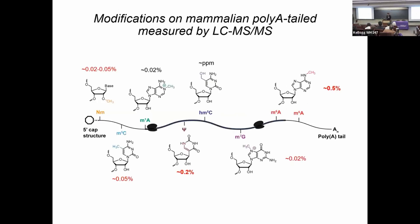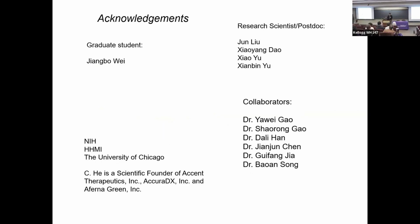In closing, while we've focused on M6A, the lab is now expanding to other RNA modifications — pseudouridine, m5C, 2'-O-methyl, and others — some of which also appear to occur on chromatin RNA. We're excited to have more stories to share next time. Thank you to my collaborators and no conflicts of interest — happy to take questions.